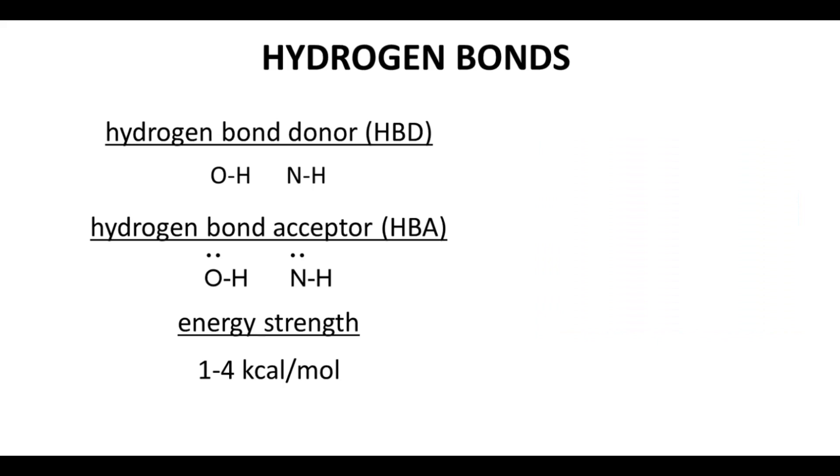Hydrogen bonds require a hydrogen bond donor and a hydrogen bond acceptor. Normally, hydrogen bond donors are OH and NH groups. You need both those atoms. And hydrogen bond acceptors are just lone pairs on an oxygen or a nitrogen atom.